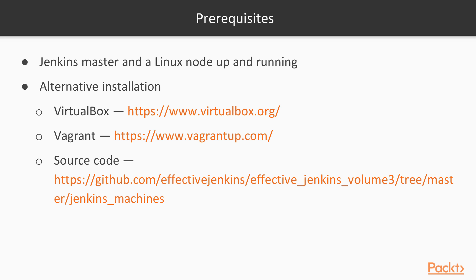One important thing to note is that we expect you to have a Jenkins master and a Linux node up and running. If you don't have this setup already in place, alternatively you can install VirtualBox and Vagrant. You can also get all of the Vagrant scripts from the Effective Jenkins GitHub account.